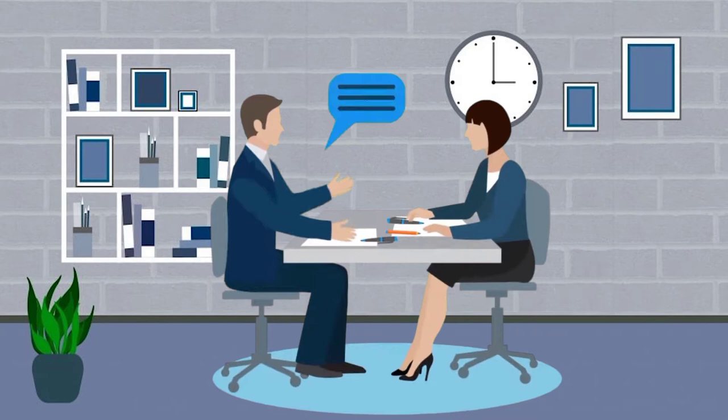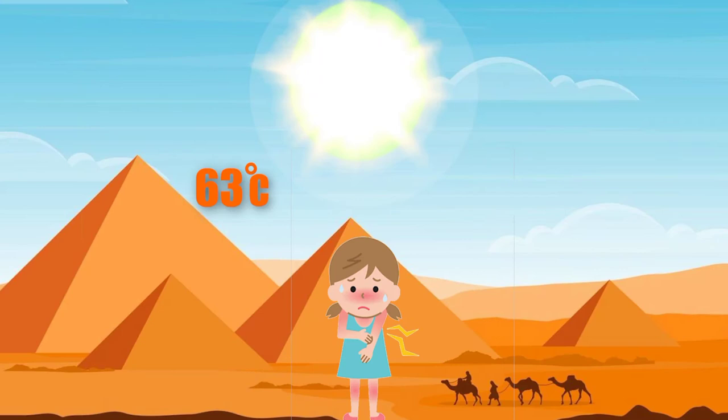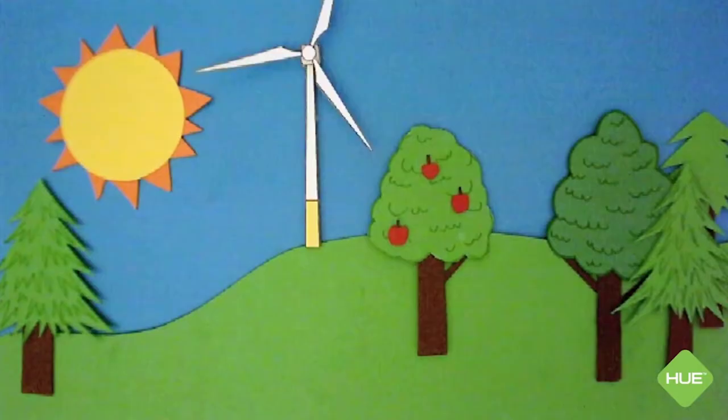Earlier in the video, I talked about 52 degrees Celsius under the shade and 63 degrees Celsius under direct sun. This 11 degrees Celsius difference is because of trees.